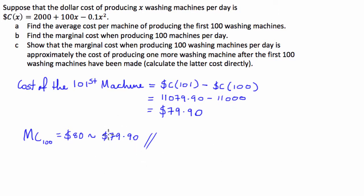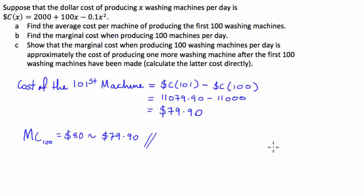What you're going to find is that as you continue to produce more and more machines per day, the cost of producing the next machine — the marginal cost — will continue to decrease. This is basically the economies of scale argument: the bigger a firm or production process is, the cheaper they can produce things per unit. That's because the fixed costs as a proportion of the total costs become less and less.